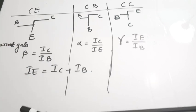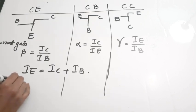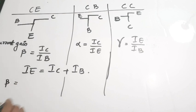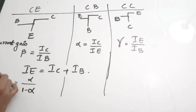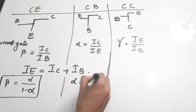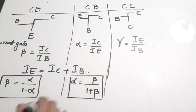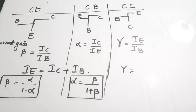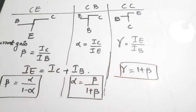Another important set of equations are the relations between the current gains. Beta is equal to alpha divided by 1 minus alpha — this is a very, very important relation. Also, alpha is equal to beta divided by 1 plus beta. And finally, gamma is equal to 1 plus beta. These three relations are very, very important.